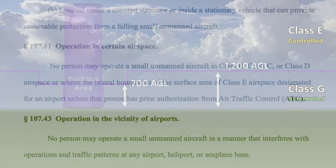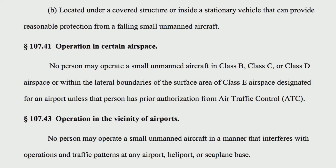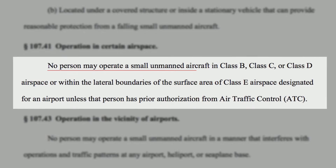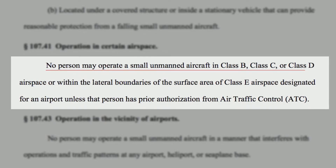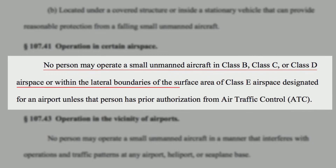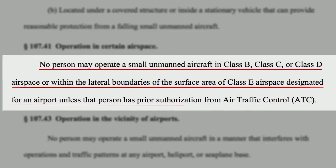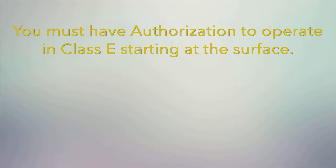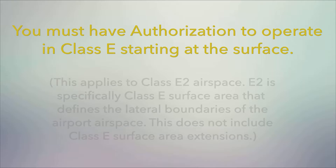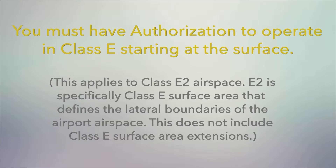Here's where the regulations kick in. Part 107.41 states: no person may operate a small unmanned aircraft in Class B, Class C, or Class D airspace, or within the lateral boundaries of the surface area of Class E airspace designated for an airport, unless that person has prior authorization from air traffic control. There's no mention of Class E airspace broadly, and since the surface area is explicitly stated, there is no reason to believe that non-surface areas are included.